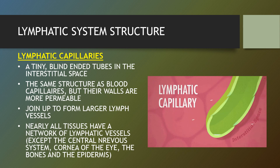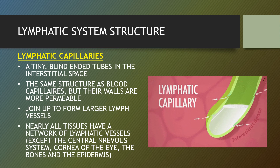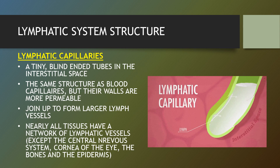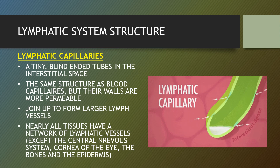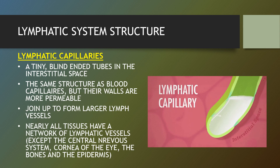Lymphatic capillaries are tiny blind-ended tubes in the interstitial space. They have the same structure as blood capillaries but the walls are more permeable, and they join up to form larger lymph vessels. Nearly all tissues have a network of lymphatic vessels, except the central nervous system, the cornea of the eye, the bones and the epidermis. The wall of the lymphatic capillary is composed of endothelium in which simple squamous cells overlap to form a simple one-way valve.